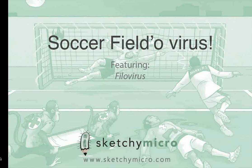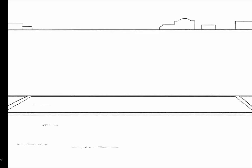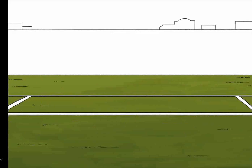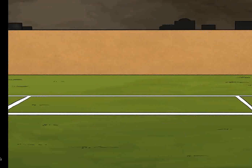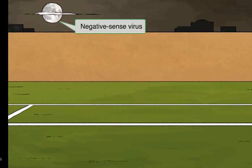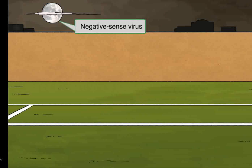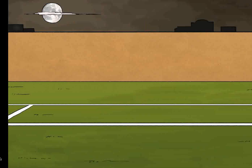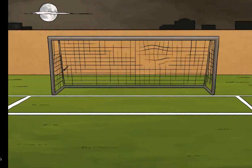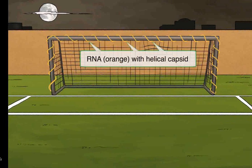For a virus that's caused such a worldwide scare, let's learn about it with the backdrop of the world's most popular sport. Filoviruses are negative sense, single-stranded, helical RNA viruses. As you can see, this game is taking place at night — that's how we're indicating it's a negative sense RNA virus. We're also going to draw in orange spirals along the post and crossbar to remind you that the nucleocapsid of the virus is helical in shape.